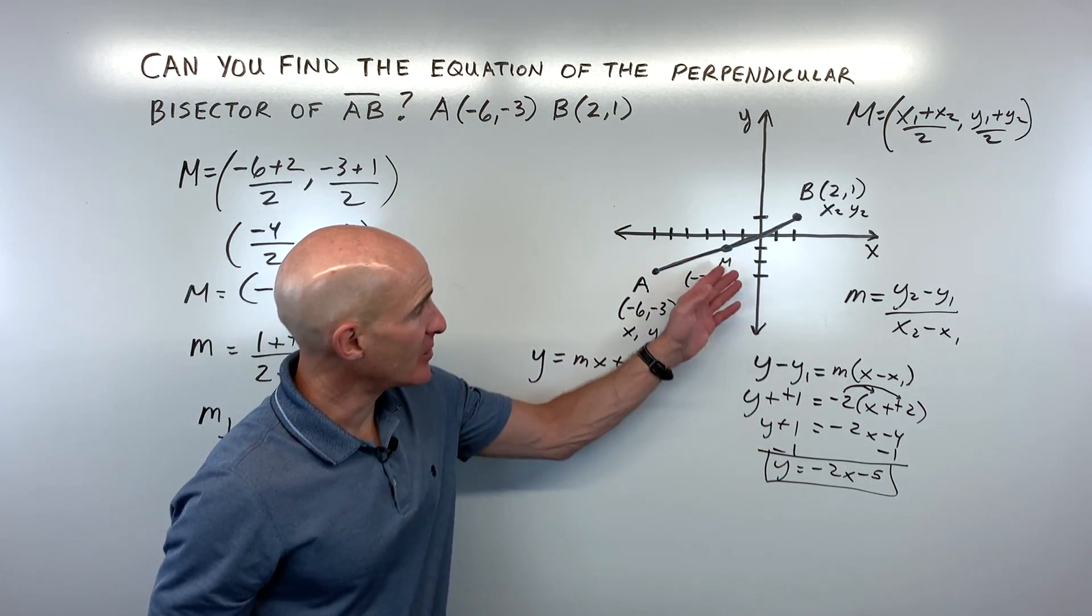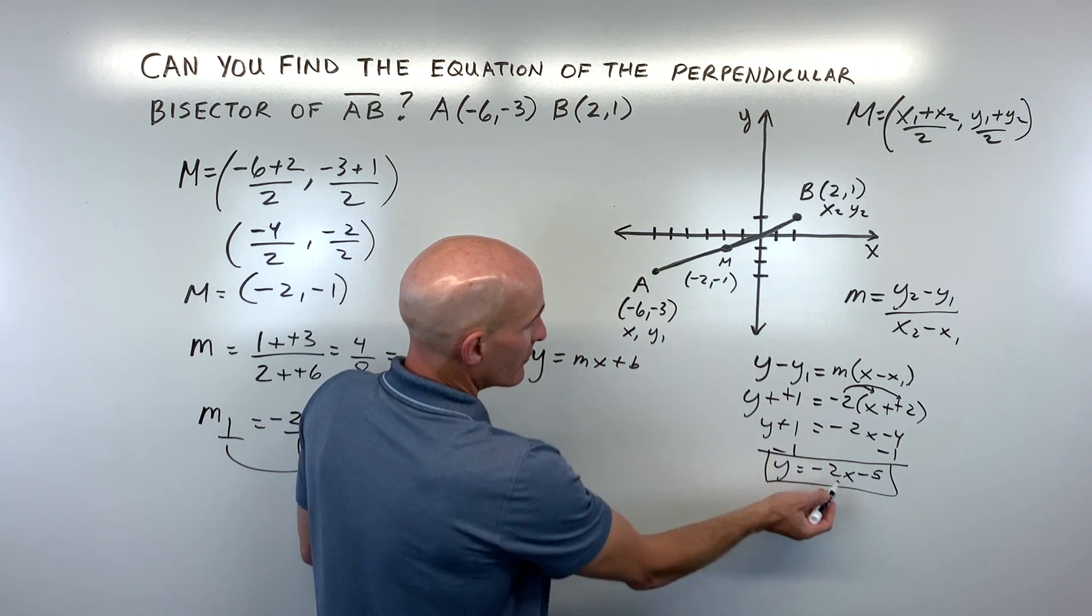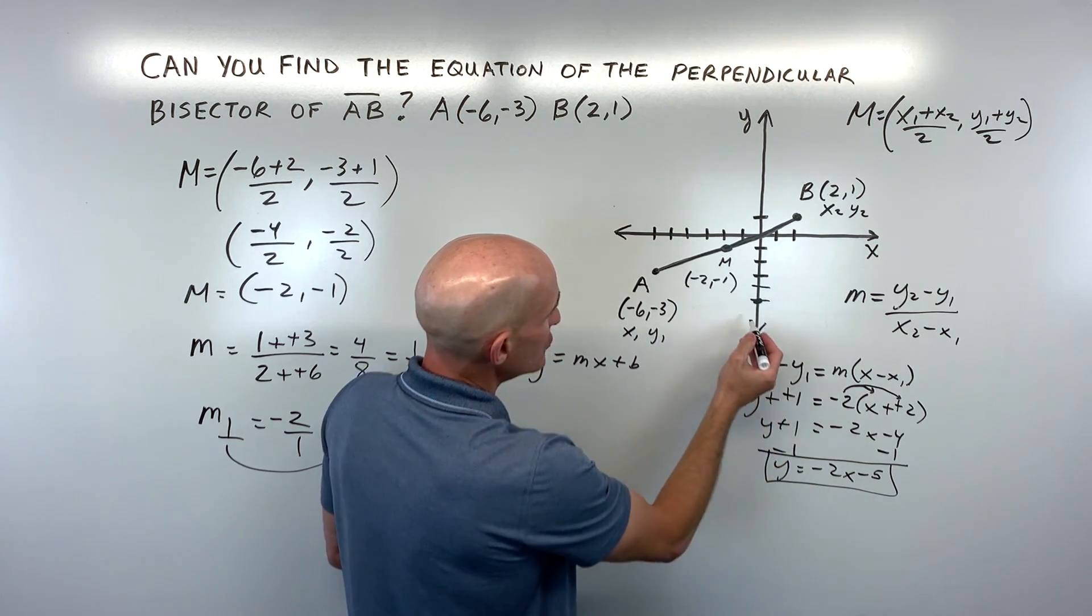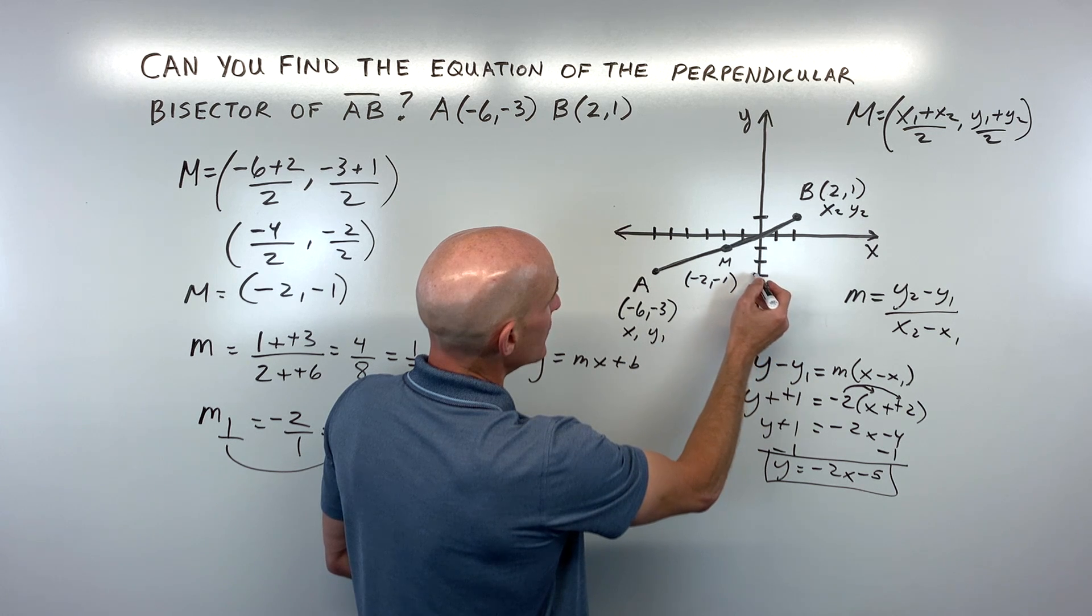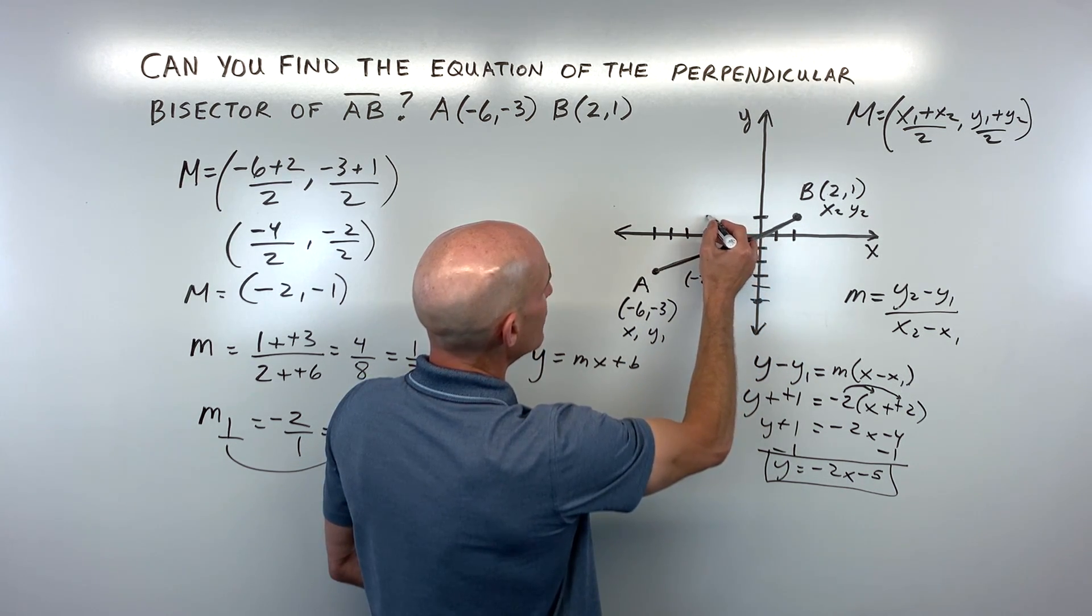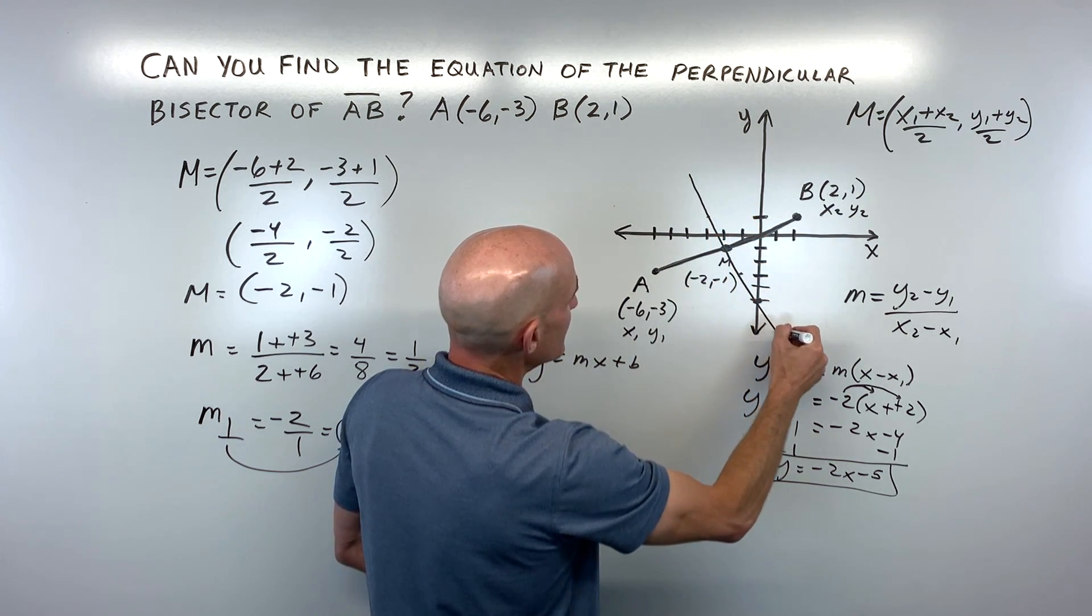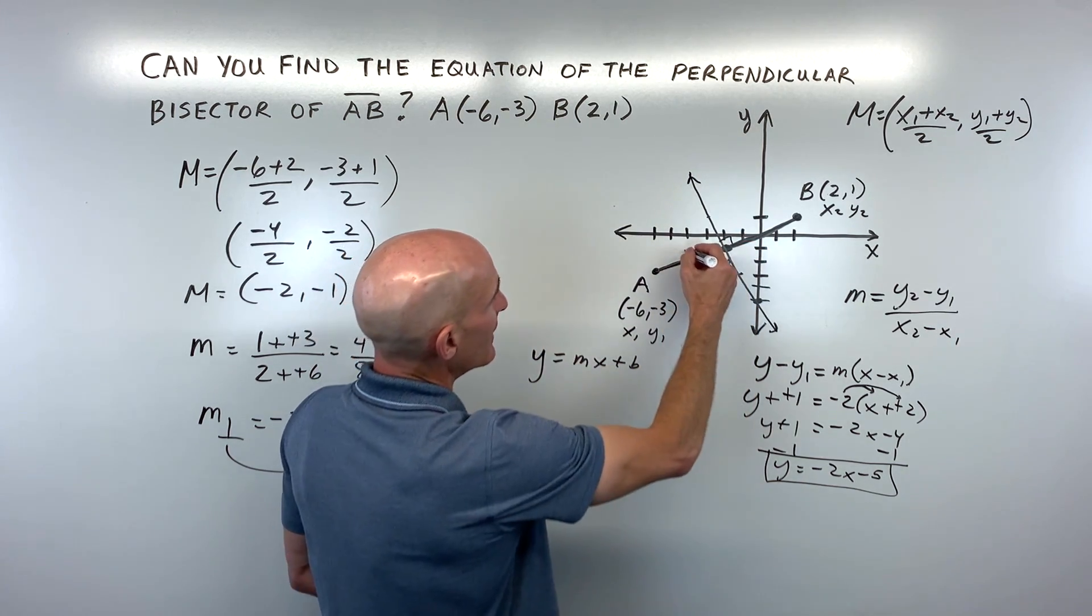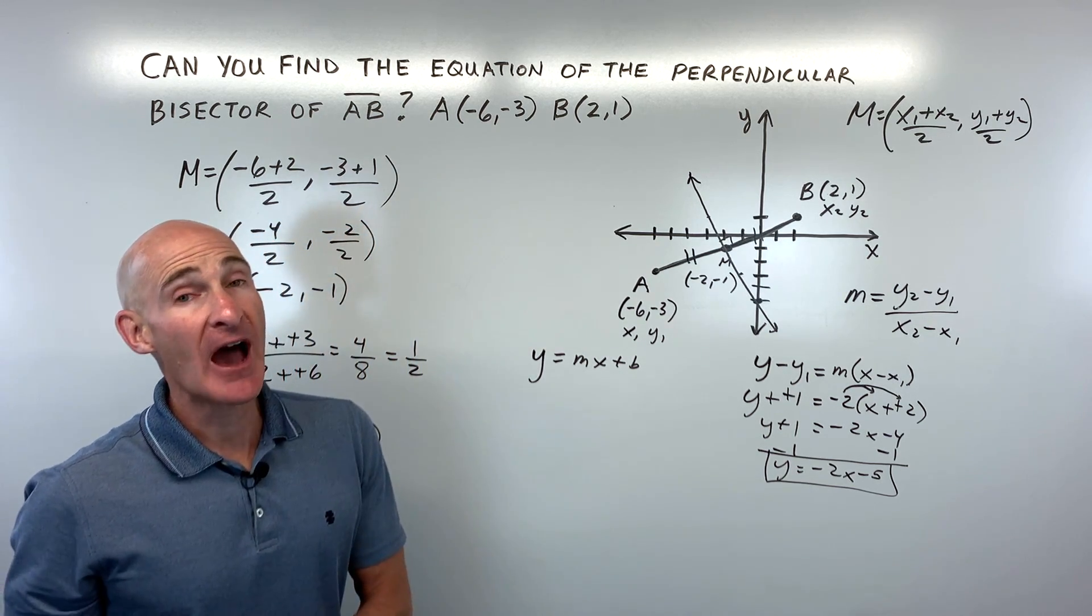Now let's see if we can graph it on here just to visualize. So it has a y-intercept or a b-value of negative 5, so that's a slope of negative 2, which means we go down 2 over 1, or we can go up 2 and left 1, up 2 left 1, up 2 left 1. So basically this line looks something like this, and you can see it's at a right angle, perpendicular, and it's bisecting or cutting that segment AB in half, and you got it.